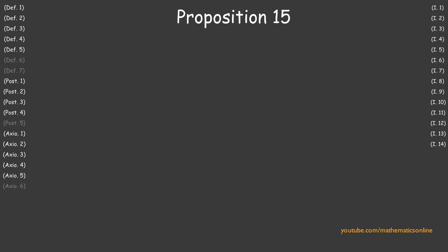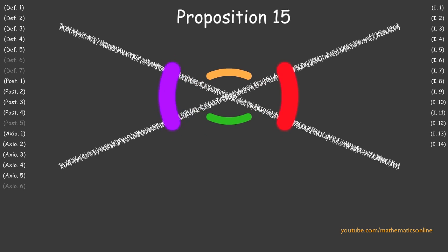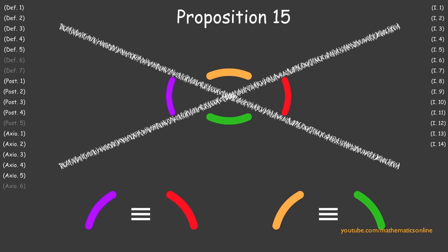In Proposition 15, we prove that if two straight lines intersect, then the vertical angles are always congruent.